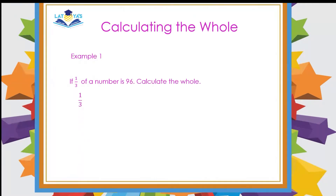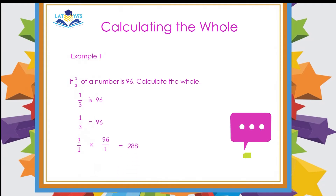This question is telling us that 1 third of a number is 96. Therefore, 1 third of a number is equal to 96. So to calculate the whole, we find the reciprocal of the fraction — we flip the fraction and multiply by 96. When multiplying fractions, we always look for opportunities to reduce before we multiply. Here we don't have anything to reduce, so we simply multiply 3 by 96 and we'll get the whole number to be 288.